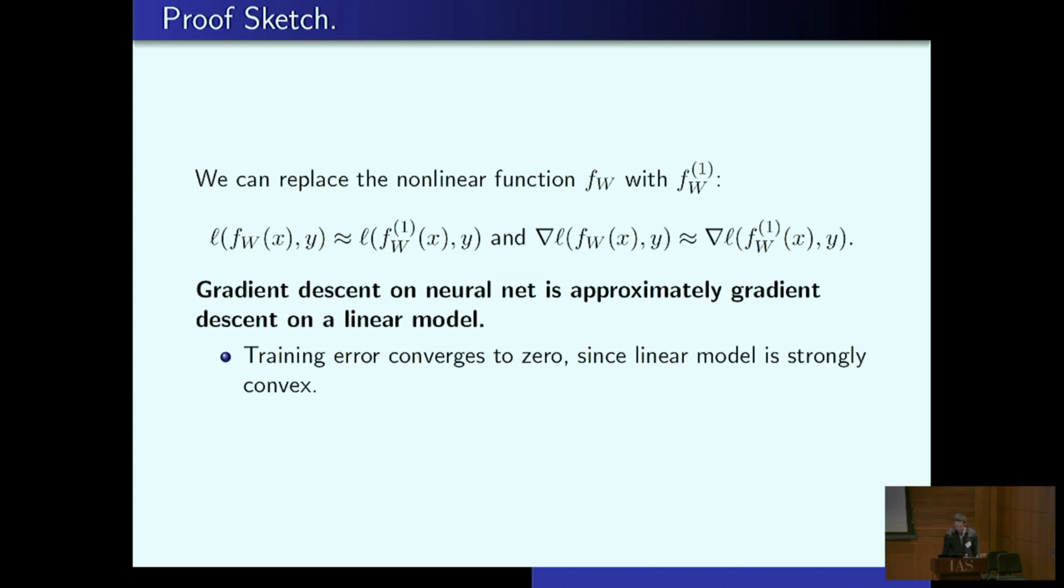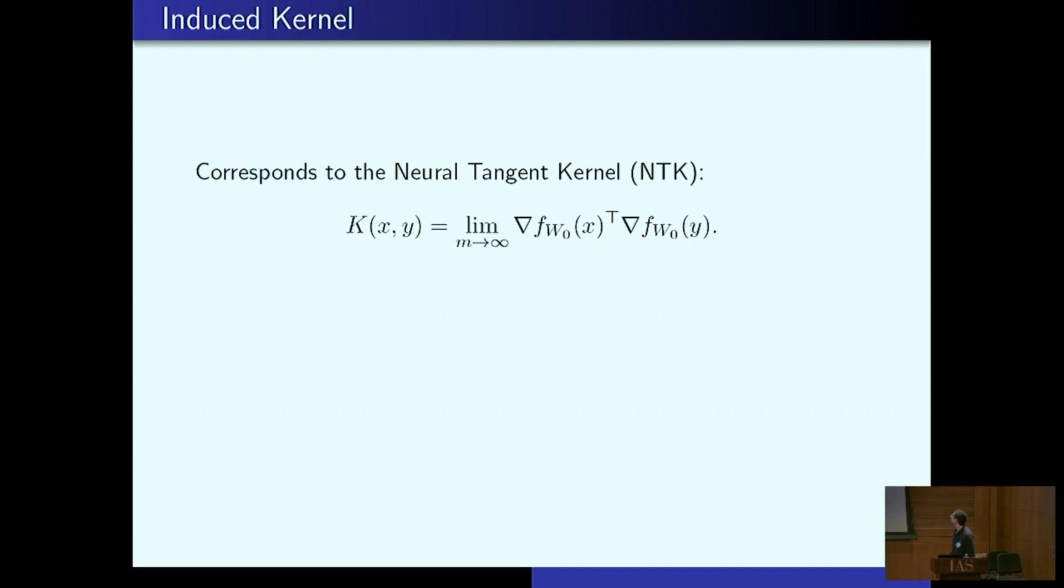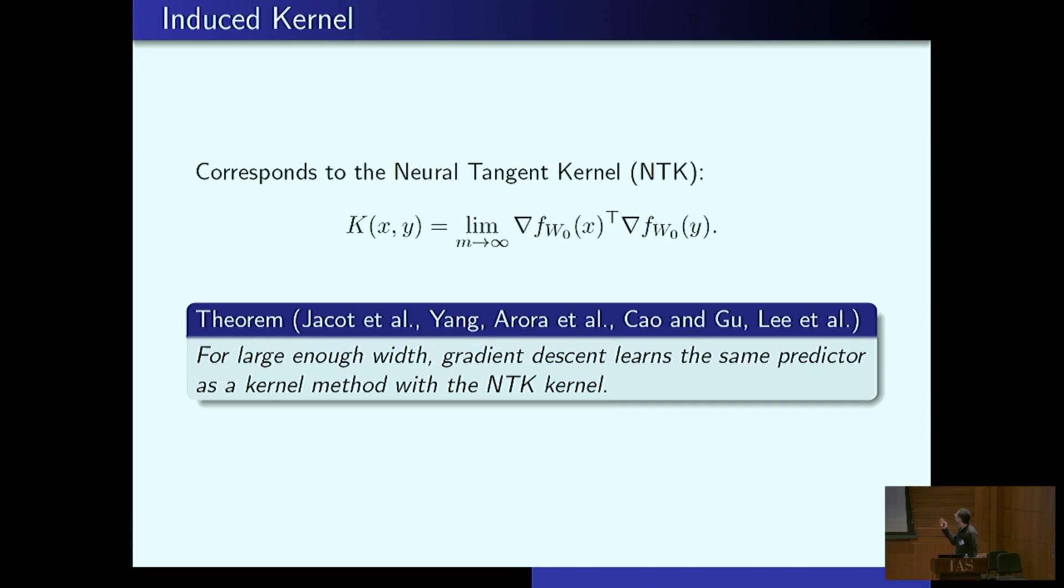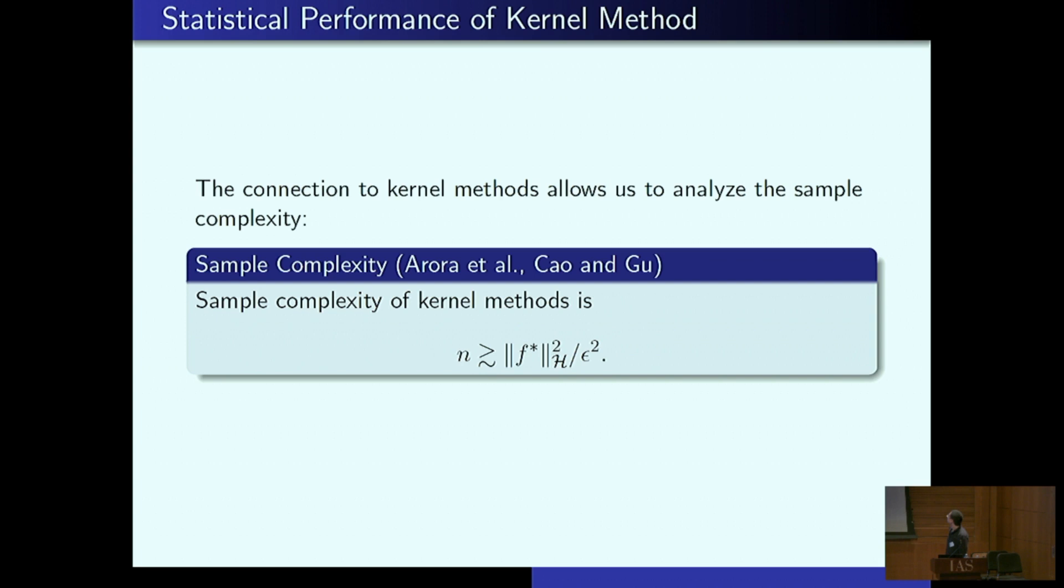We know how to analyze gradient descent on a linear model as many good properties. The training error converges to zero and the linear model is strongly locally strongly convex. Soon after, people realize that of course if you have a linear model there's always a corresponding kernel. You can start thinking about an infinite width limit. And then these people, they proved that if you're wide enough, gradient descent in fact does become a kernel method with a certain kernel written here known as the neural tangent kernel. This is probably all a review of what Simon already talked about.